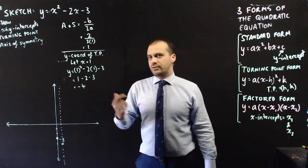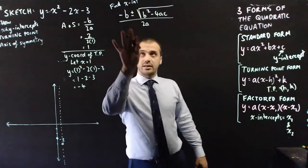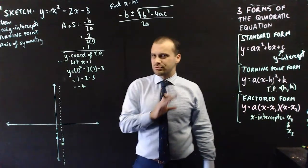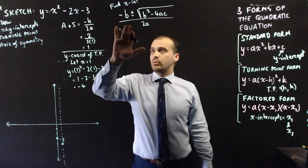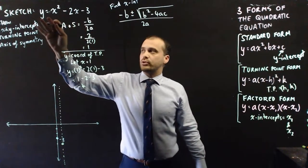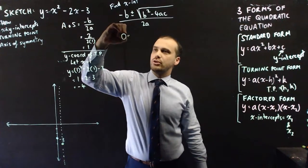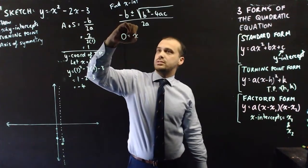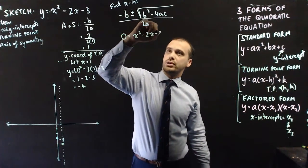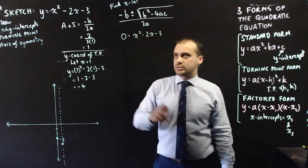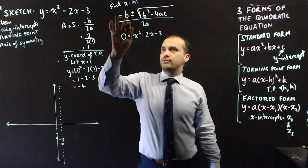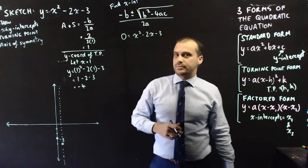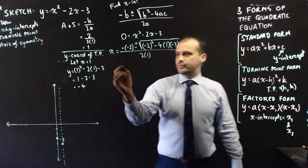I can use the quadratic formula to find the x-intercepts. We use it to solve a quadratic of the form 0 equals ax squared plus bx plus c. The quadratic here is x squared minus 2x minus 3. So let's sub in negative 2 for b, 1 for a, and negative 3 for c, and x is going to be equal to all of this.